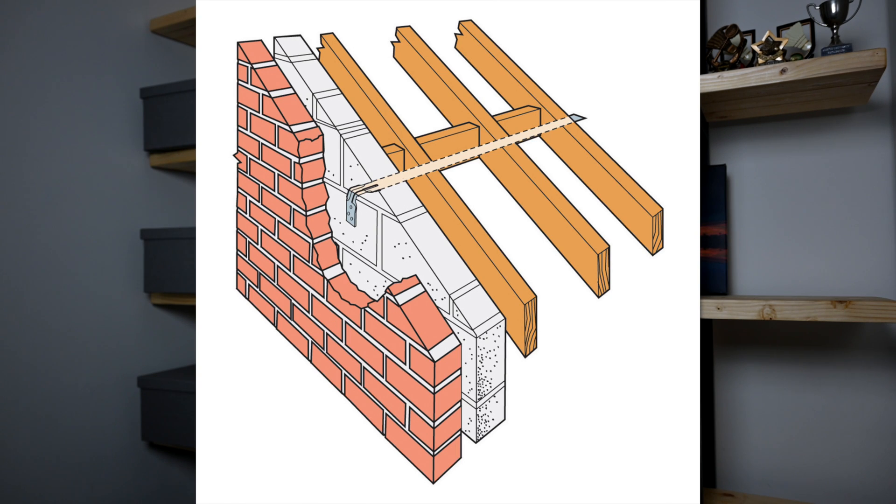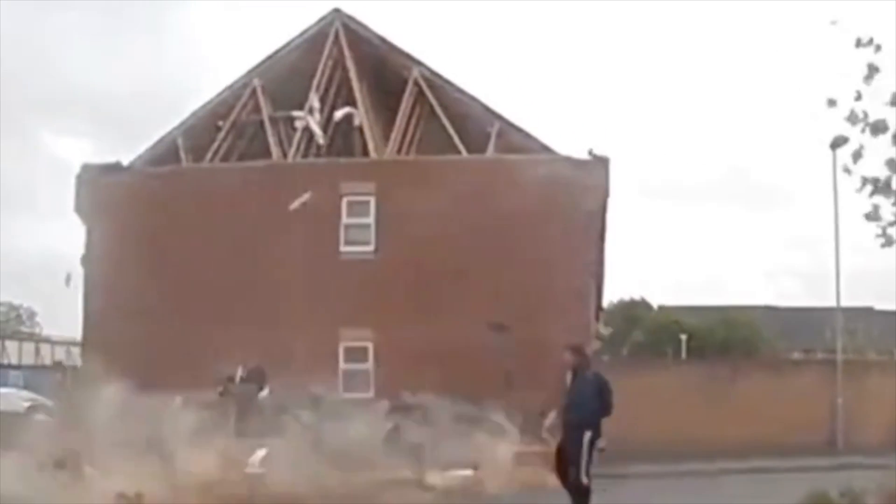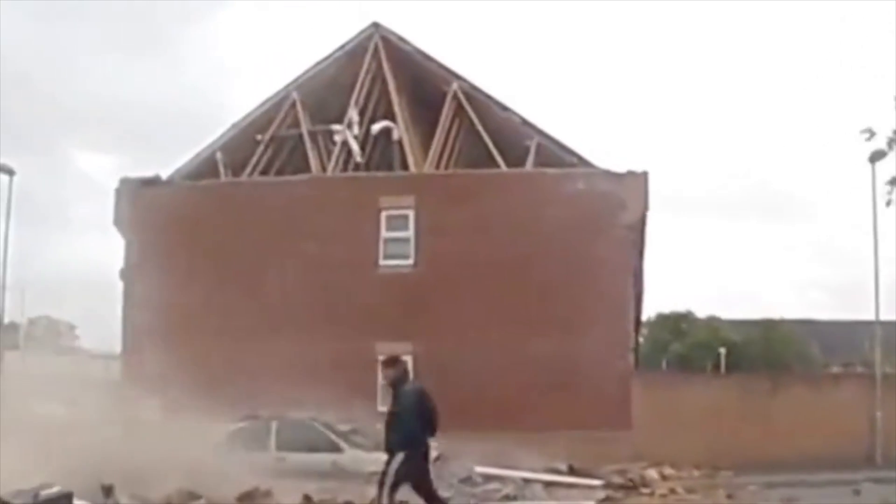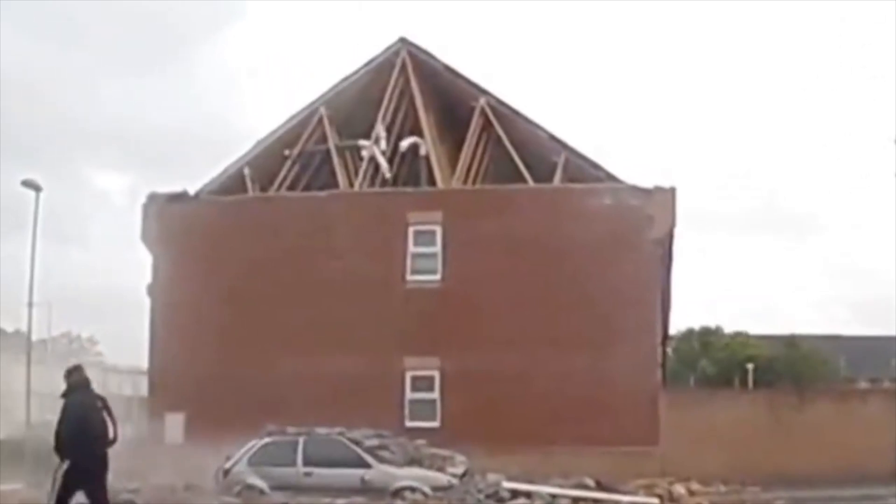The first type is holding down straps and the other is lateral restraint straps. Restraint straps are there to essentially tie the roof structure to the wall, and very commonly the walls — especially in the UK — are going to be made out of masonry like blockwork or brickwork. There's a recent video going around LinkedIn showing a wall which has basically just fallen over because of the lack of restraint, so you can see why providing restraint to the wall is really, really important.